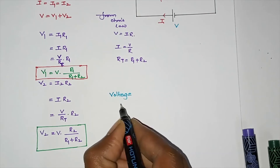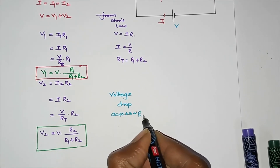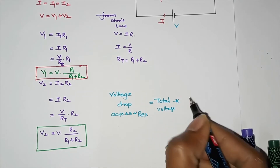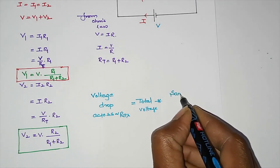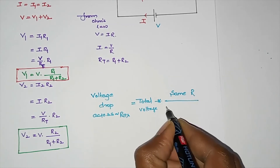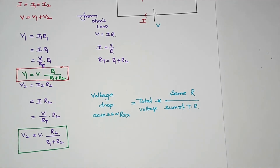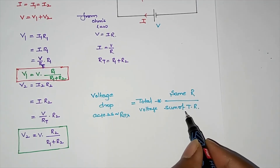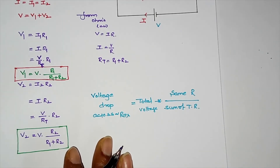As you can see, the voltage drop across a resistor equals the total voltage multiplied by that same resistance divided by the sum of the total resistance. So we can find V1, V2, V3 values using this rule.